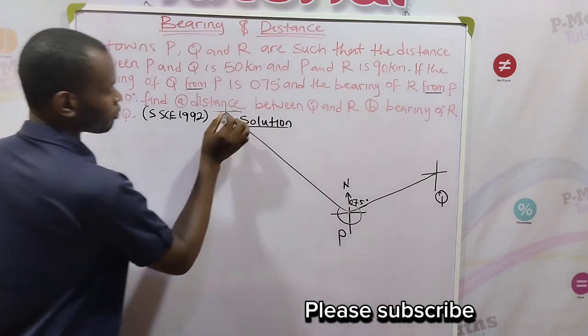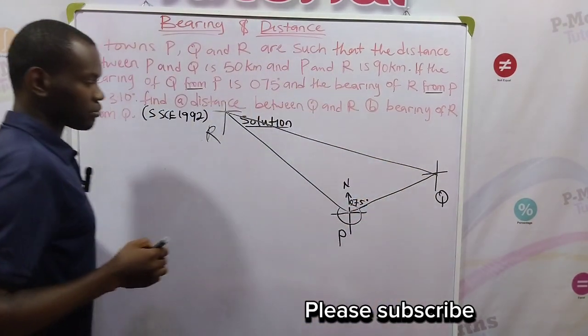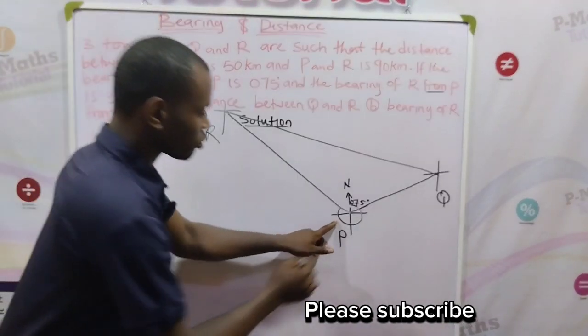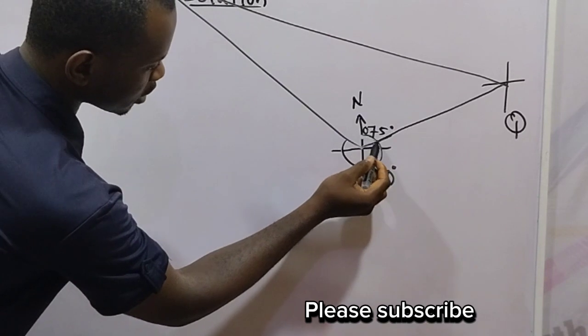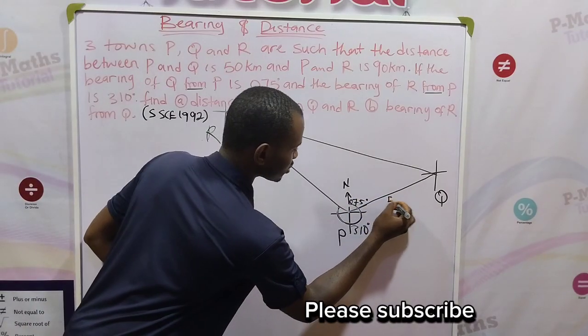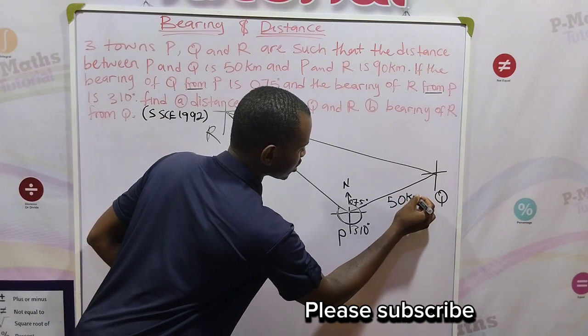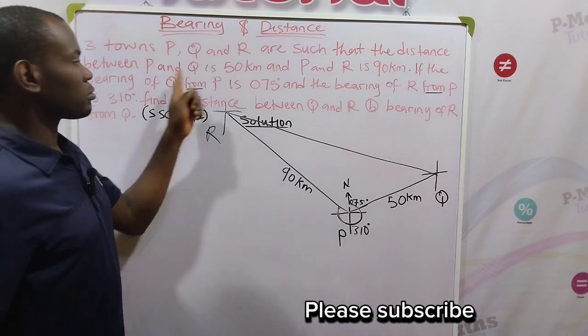So we can now complete the diagram to form a triangle. Take note that this is 310 degrees, this angle from here down to this point. Let's put the distance is 50 kilometers and here is 90 kilometers.